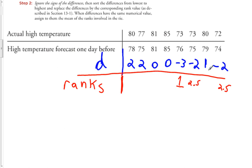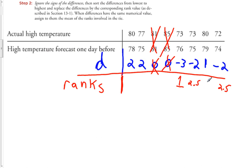The next number in order is one. We're ignoring the pairs that had a difference of zero, so we don't count those. We've already used ranks two and three for the tied negative twos, so the number one gets the fourth rank. The two positive twos would be ranked 5 and 6, so we average those to get 5.5, and assign both of those twos a rank of 5.5. So here are our ranks — and we're going to ignore the original differences in favor of the ranks.